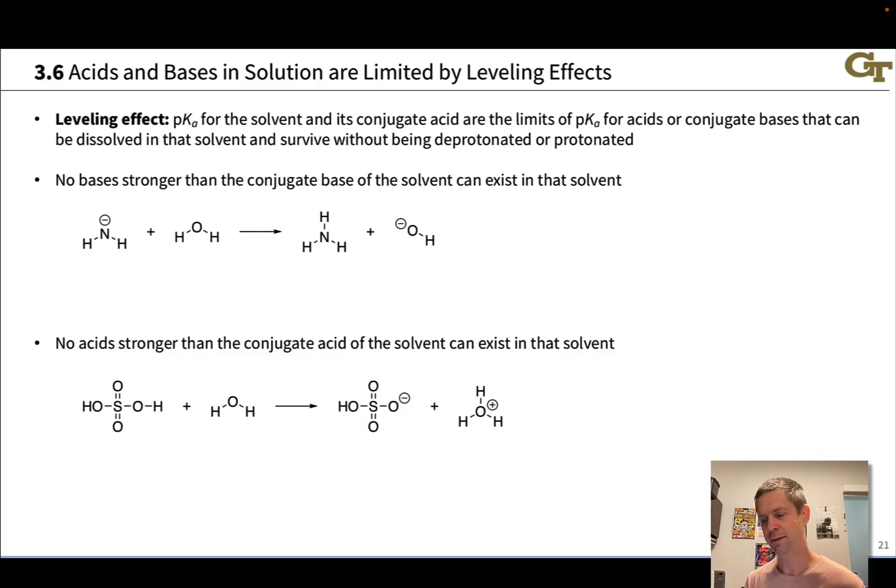One thing that the theory of acid-base equilibrium teaches us is that for a given solvent, there's actually a limited range of acids and bases that can exist in that solvent. Very, very strong acids will simply protonate the solvent, creating its conjugate acid. Very, very strong bases will deprotonate the solvent, creating its conjugate base.